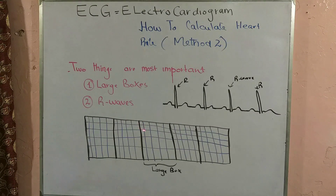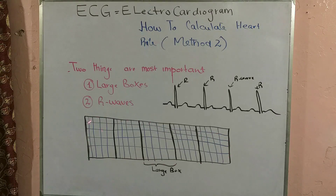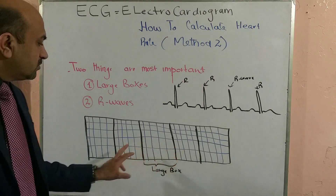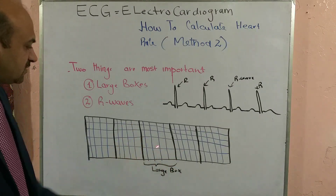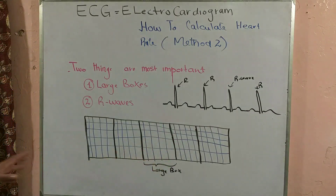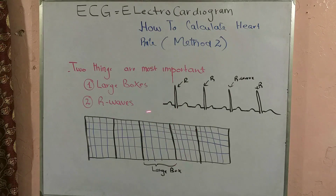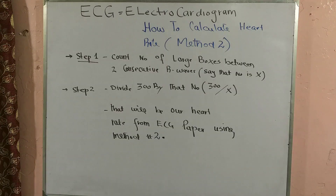The second thing to know is the large boxes on the ECG. In the last video we discussed that one large box is separated from adjacent large boxes by a thick black line, while thin lines separate the small boxes. These two concepts — the R wave and the large boxes — are the most important things to remember for Method 2.